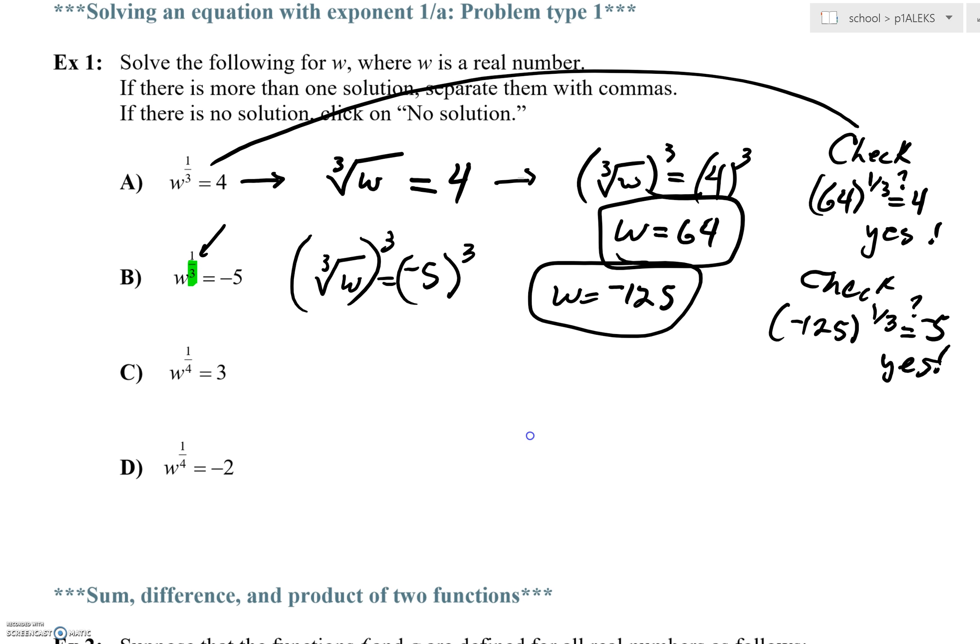Now, as we look at letter C, this is really the fourth root of W is equal to 3. It's the fourth root. How do we know that? Well, your denominator down here, that 4, tells you what type of a root we really have. So, how do I get rid of a fourth root? We have to raise to what power? The fourth power, right? And 3 to the fourth, for the sake of time, we could type it into the calculator in a heartbeat. We're going to get 81.